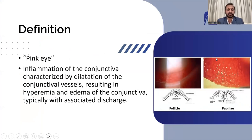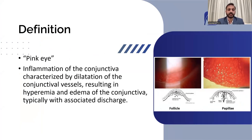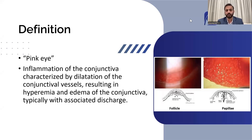What is the definition of conjunctivitis? Conjunctivitis, also known as pink eye, can be defined as the inflammation of conjunctiva, characterized by dilatation of the conjunctival vessels, resulting in hyperemia — that means redness — and edema of the conjunctiva, which is also called chemosis. Typically it is associated with some sort of discharge which can be serous, mucus, mucopurulent, purulent, or hyperpurulent.